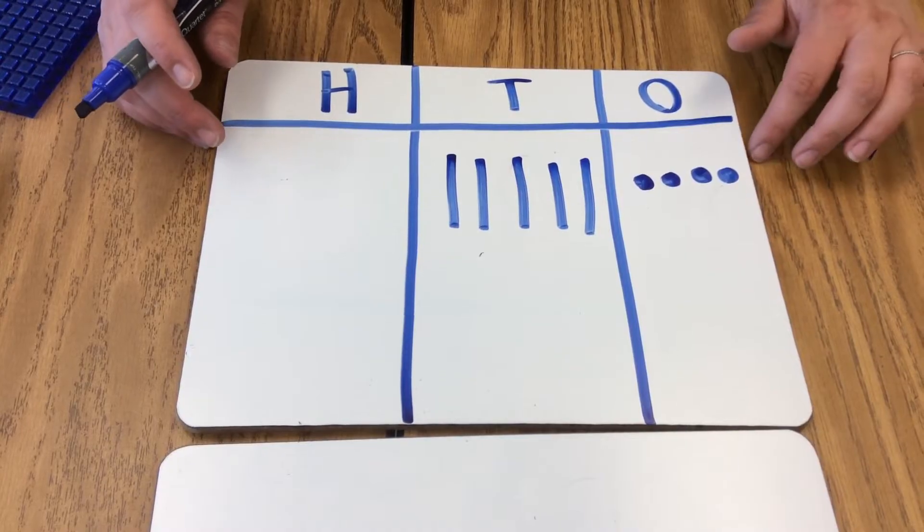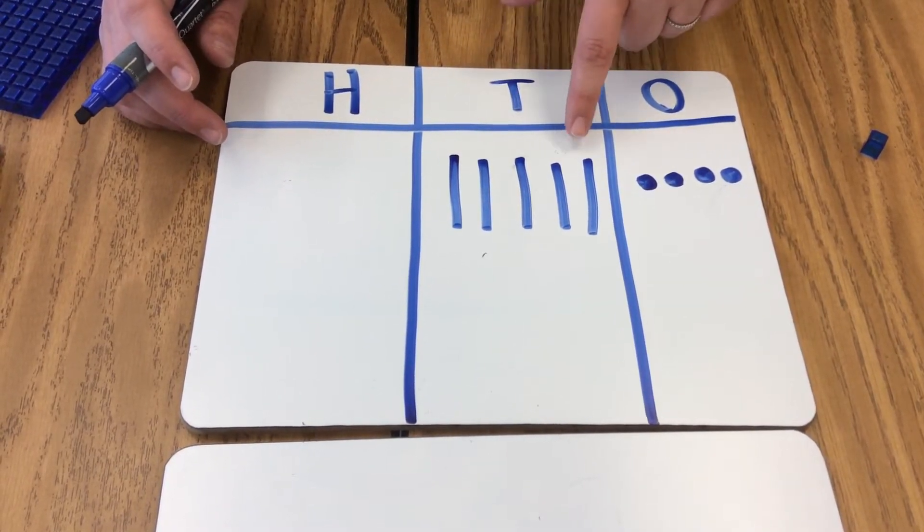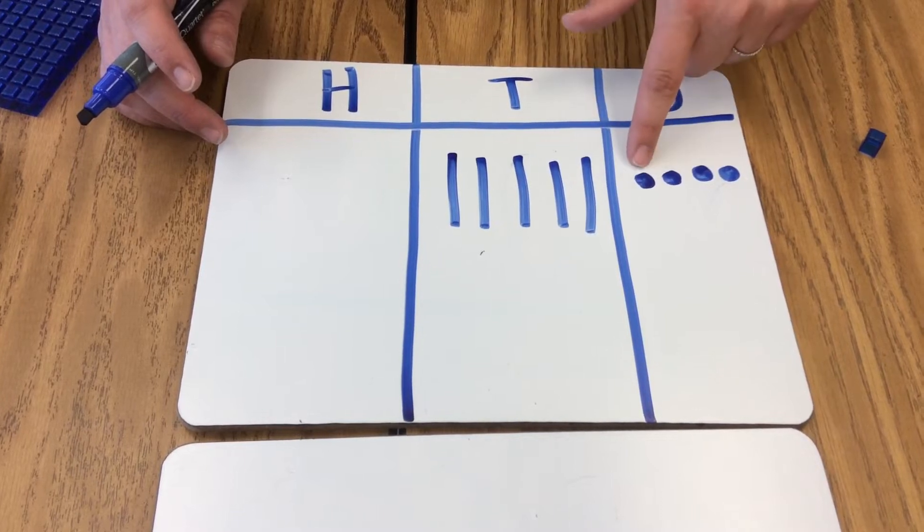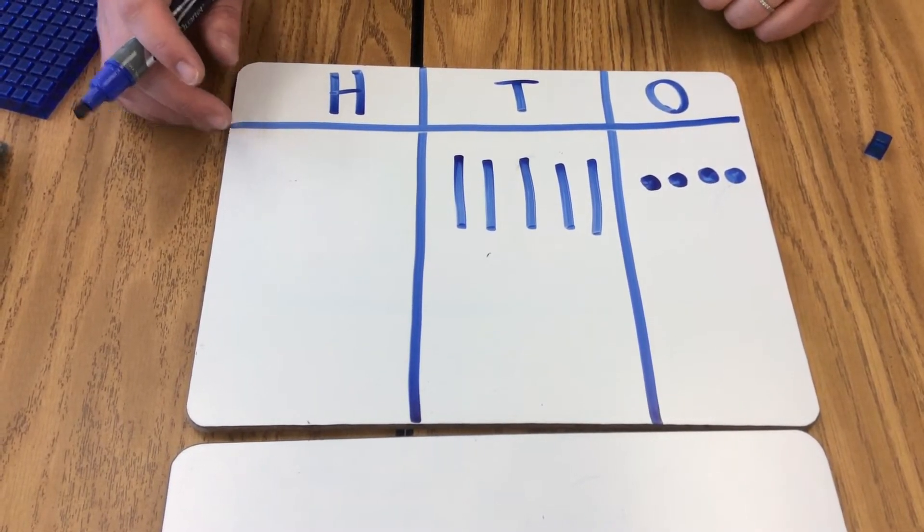Now let's count and make sure we have the right number. 10, 20, 30, 40, 50, 51, 52, 53, 54. Let's try a harder number.